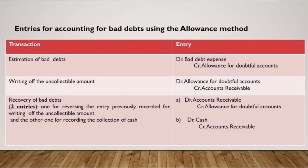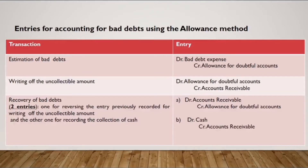Let me remind you of the entries we do to account for bad debts using the allowance method. The first entry is for estimating bad debts, recorded on the same date the sale happened: debit bad debt expense and credit allowance for doubtful accounts, which is a contra-asset account. Then we have an entry for writing off the uncollectible amount: debit allowance for doubtful accounts — because now we are sure this amount will not be collected — and credit accounts receivable, since we cannot leave accounts receivable showing a balance we no longer expect to receive.